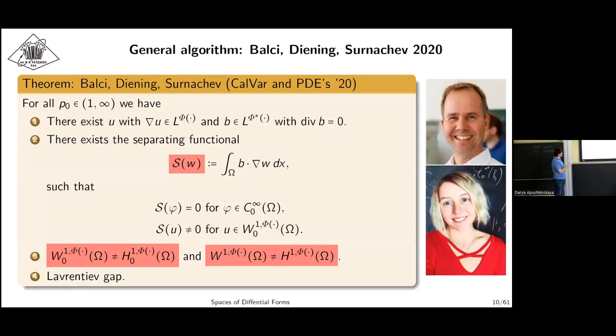It uses this idea with the integral separating functional. Find U from the natural energy space and vector field D from the conjugate space. This gives you a bounded linear functional. One can construct such U and B that this functional is zero on smooth functions and not zero on the special function U. This gives absence of density.